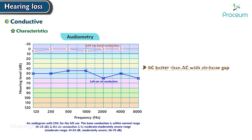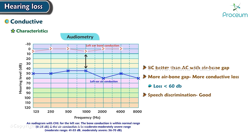Audiometry shows bone conduction better than air conduction with an air-bone gap. The greater the air-bone gap, the more is the conductive loss. Loss is not more than 60 decibels, and speech discrimination is good.